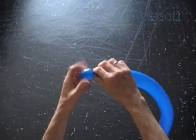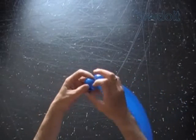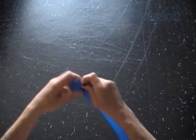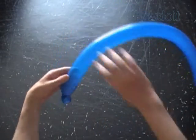Twist the first soft 1 inch bubble. Lock both ends of the first bubble in one lock twist. Twist the second about 5 inch bubble.